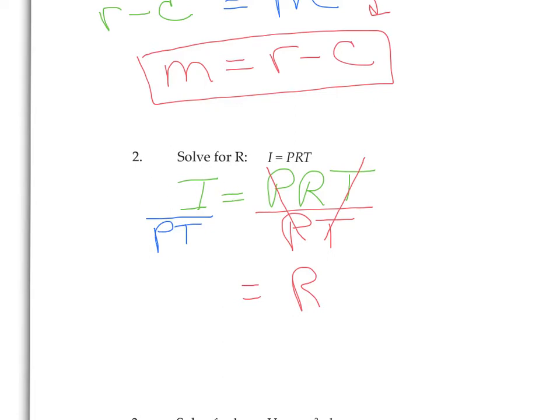If we could simplify this, we would. But there's nothing here to simplify. It doesn't reduce. We have I over PT equals R. And we solved for R. Solving for a variable just means to isolate that variable.